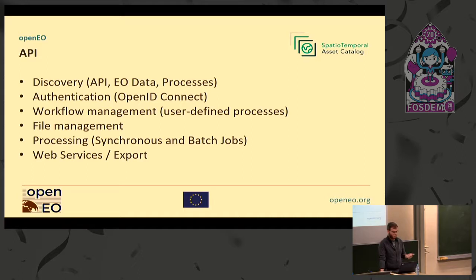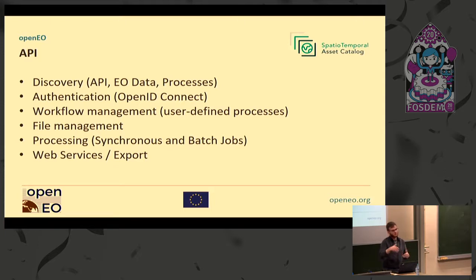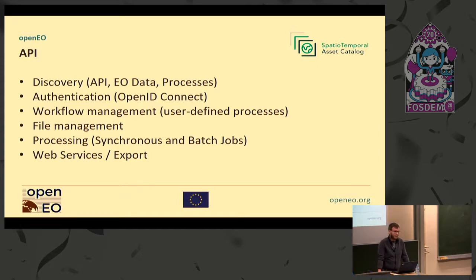Then it supports authentication with OpenID Connect. Then you have workflow management where you can basically store your own user-defined processes. So if you want to make a new algorithm based on the predefined processes we have, you can store them as user-defined processes again and use them as if they were predefined before from the backend — it's really integrated, and you can pass around your algorithms and run them on other backends, or pass them to other users to be reused. Then there's file management where you can upload assets — if there's a GeoJSON file that you need to pass, or things you want to download, all handled by a central file management API.